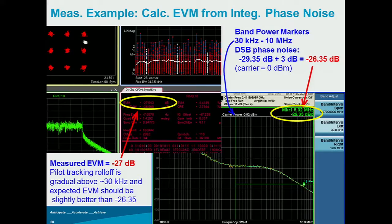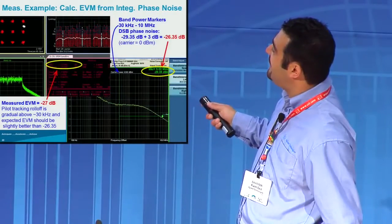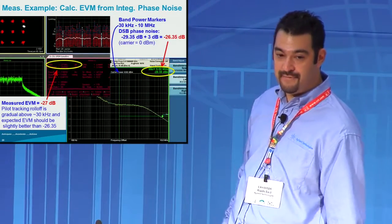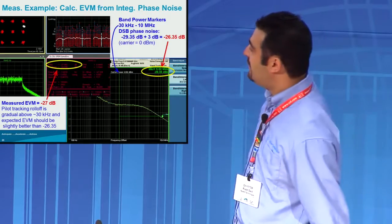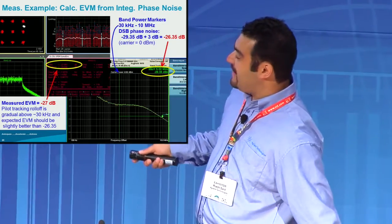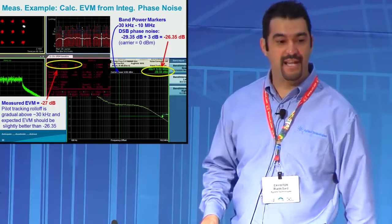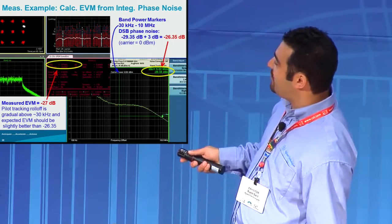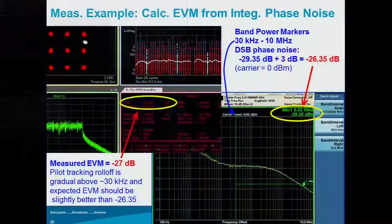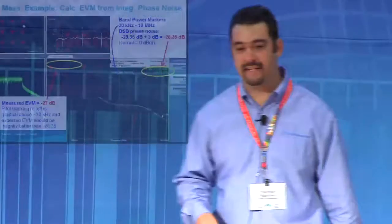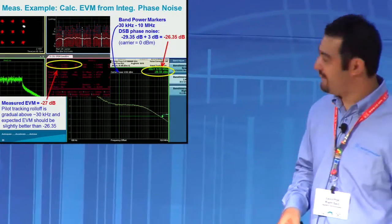Once we do that integration and look at the phase noise plot, we calculate an EVM of about minus 26.35 dB is what we would expect. We then went ahead and injected phase noise to that specified amount into our transmitter and actually measured it — and lo and behold, it measured to be about minus 27 dBm. So the math does work. It's not perfect — there are some differences, and that has to do with the tracking error of the equalizer and its ability to remove the phase noise.